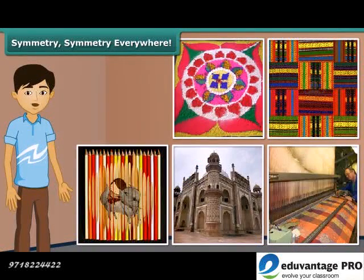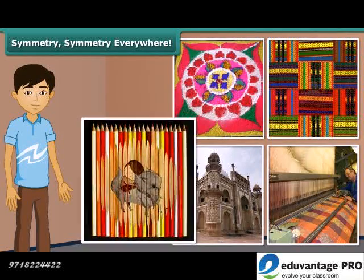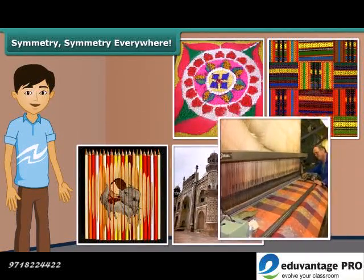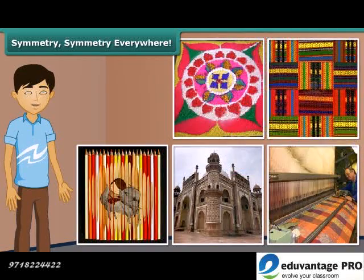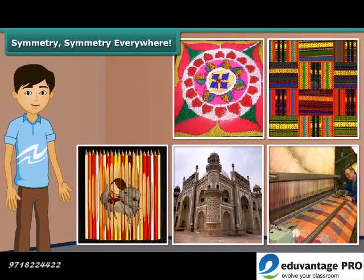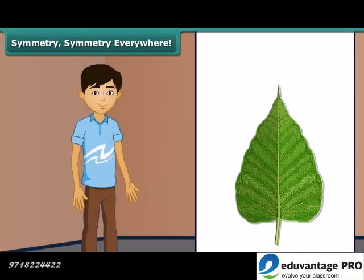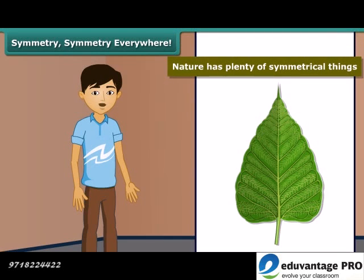Children, you will wonder that symmetry is part of our everyday life as it is applicable in art, architecture, textile technology, patterns in clothing, rangoli, etc. Many road signs you see are symmetric. Look at this leaf. It is symmetrical. Thus, even nature has plenty of symmetrical things.